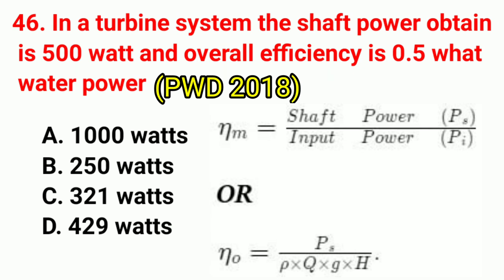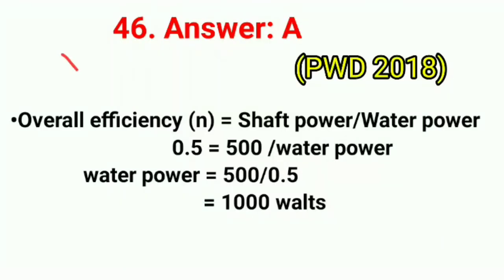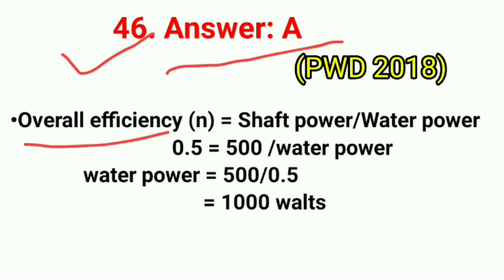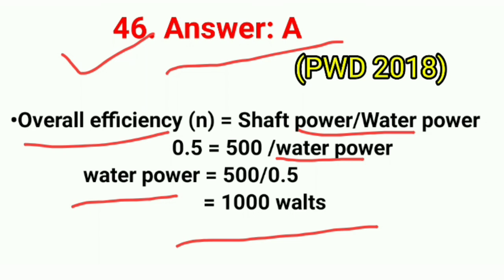Question No. 46. In a turbine system, the shaft power output is 500 Watt and overall efficiency is 0.5. Find the water power. Correct answer is option A: 1000 Watt. Using: overall efficiency η = shaft power / water power. So 0.5 = 500 / water power, giving water power = 500 / 0.5 = 1000 Watt.